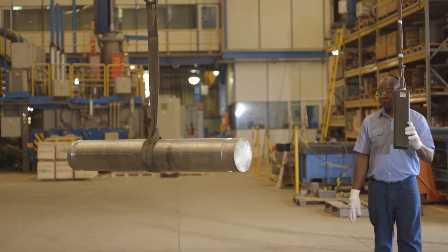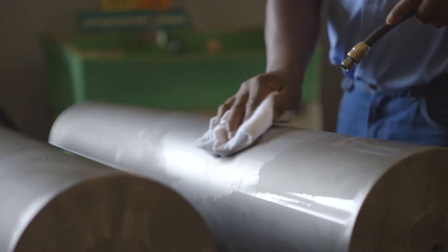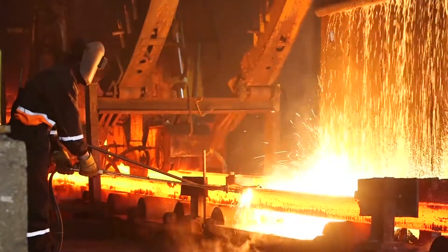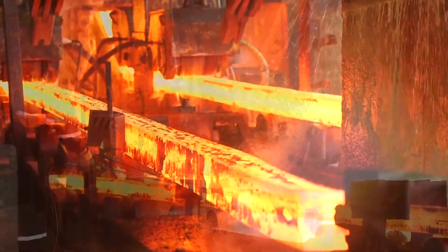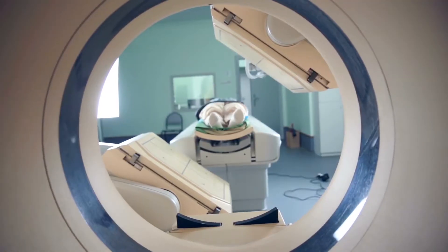Niobium, element 41 in the periodic table, is a transition metal. Its main use is as a micro-alloying element in high-strength steels.